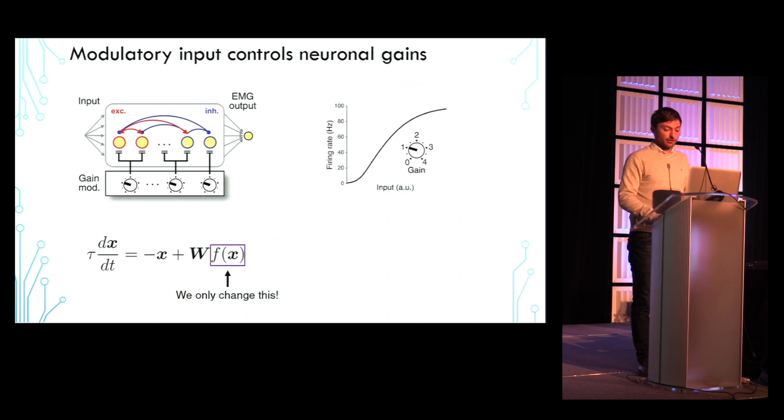We model the gain function F as a hyperbolic tan function, which is plotted here on the top right, where changing the gain changes the slope of the gain function at baseline rate. Here I'm plotting the gain function with the gain set to 1 in black and 2 in blue.